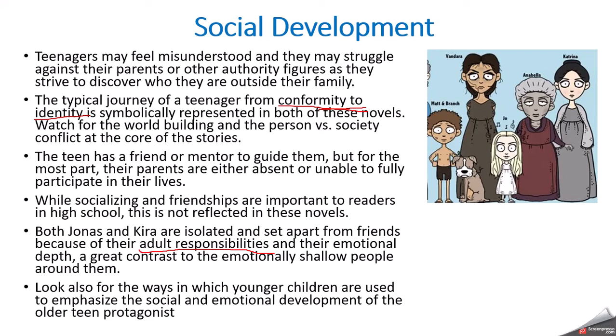I'd like you to look for how younger children in both books are used to emphasize the social and emotional development of the older teen protagonist. Matt and Branch the dog in Gathering Blue, and the little singer Joe — how do they compare and contrast to Kira? For Jonas, he has a younger sister Lily, and we'll see how her emotions reflect the child that he used to be. Watch for those contrasts.